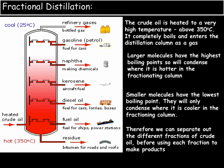So how does fractional distillation work? To start off with, the crude oil is heated to a very high temperature, above 350 degrees Celsius. At this point, it completely boils and enters the distillation column as a gas. As we go up the chamber, it gets cooler, meaning there is a temperature gradient as we go up the column. The column is warmest at the bottom and coolest at the top.